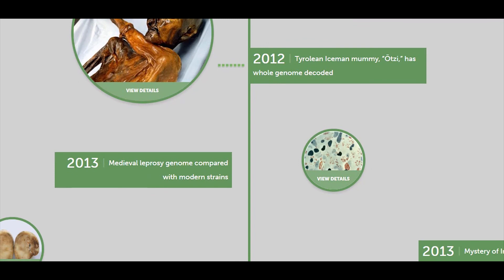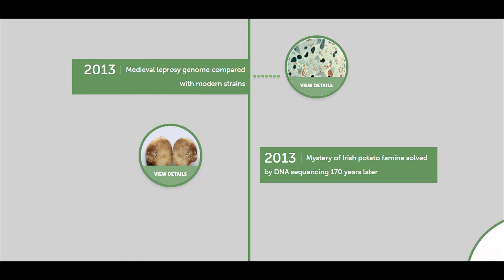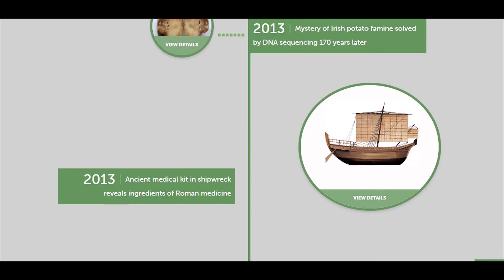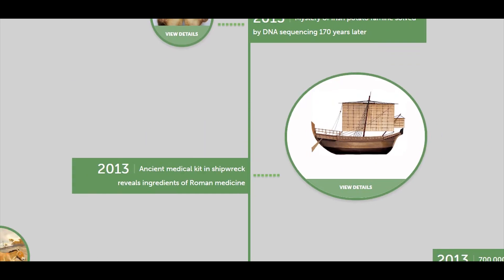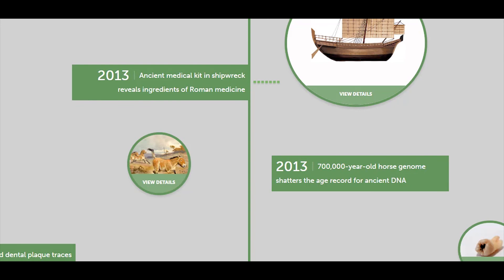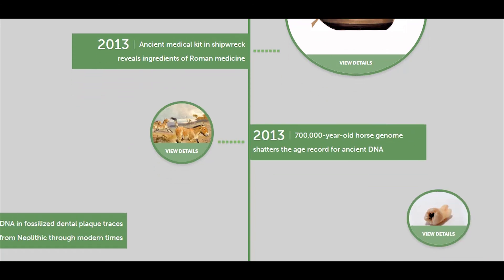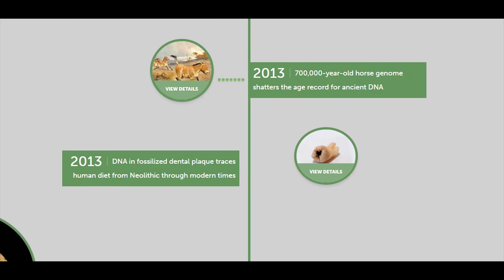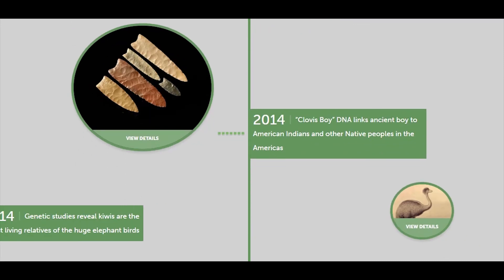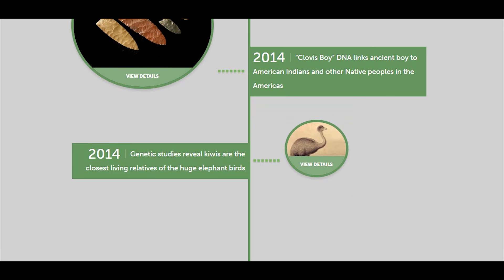In 2012, an ancient plague genome was recovered from bones from the 16th–17th century. In 2012, the Tyrolean Iceman mummy Ötzi had his whole genome decoded. In 2013, the Mycobacterium leprae genome was compared with modern strains. In 2013, the mystery of the Irish potato famine was solved by DNA sequencing 170 years later. In 2013, a medical kit in a shipwreck revealed ingredients of Roman medicines, and a 700,000-year-old horse genome shattered the age record for ancient DNA. In 2013, DNA in fossilized dental plaque traced human diets from Neolithic through modern times. In 2014, the Clovis boy's DNA linked ancient boy to American Indians and other native peoples. In 2014, genetic studies revealed that kiwis are the closest living relatives of the huge elephant birds.